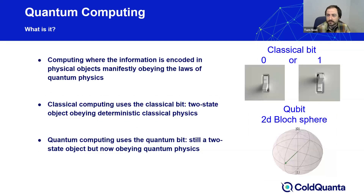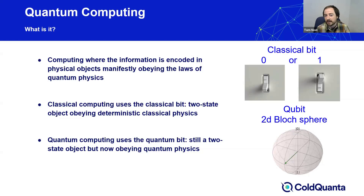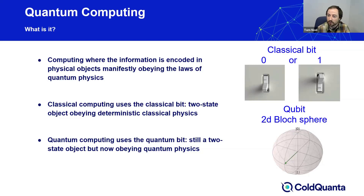So what is quantum computing? Quantum computing is computing where the information is encoded in physical objects that manifestly obey the laws of quantum physics. Whereas in classical computing we encode information in the classical bit — the two-state object obeying deterministic classical physical law, zero or one, on or off — in quantum computing we employ a quantum bit, or qubit. The qubit is still a two-state object but obeys quantum physics, so its state is described by a pair of amplitudes. This is commonly visualized as a vector on a unit sphere, where the pure zero state resides at the north pole, the pure one state at the south pole, and between those extremes there's a continuous range of superposition states.